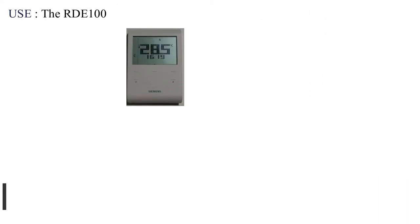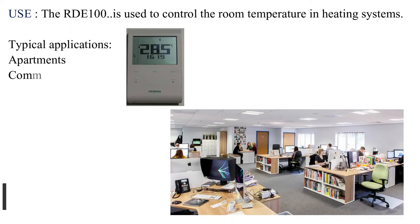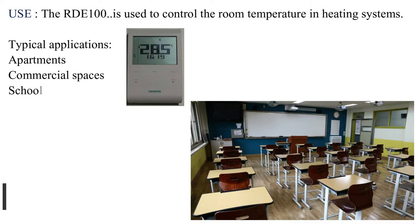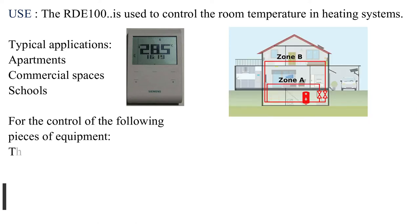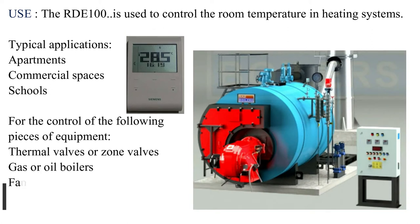The RDE 100 is used to control the room temperature in heating systems. Typical applications include apartments, commercial spaces, and schools. It can control thermal valves or zone valves, gas or oil boilers, fans, and pumps for floor heating.